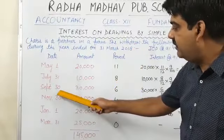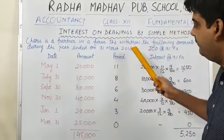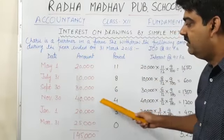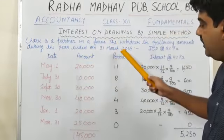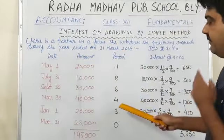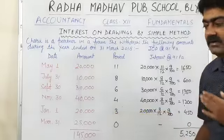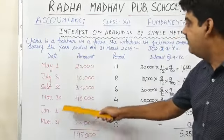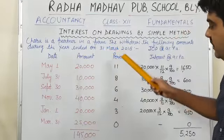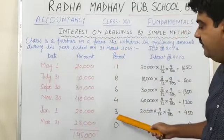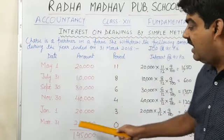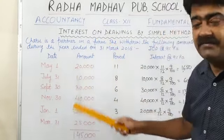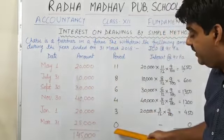From September 30 to March 31, the total time period will be 6 months. From November to March 31, the total time period will be 4 months. And from January 1 to 31st March, the total time period will be 3 months. And from March 31 to March 31, the time period will be 0.